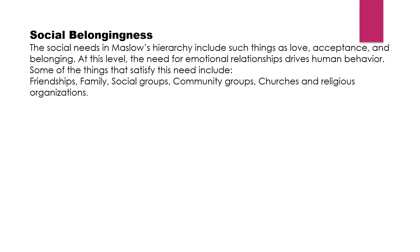The social needs in Maslow's hierarchy include such things as love, acceptance, and belongingness. At this level, the need for emotional relationships drives human behavior. Some of the things that satisfy this need include friendships, family, social groups, community groups, churches, and religious organizations. Social belongingness means they want to be a part of some organization or group to make one's life happy and content.